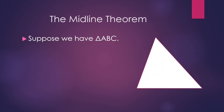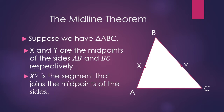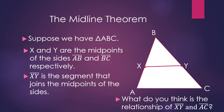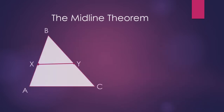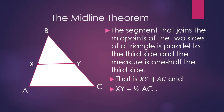Suppose that we have triangle ABC and XY are the midpoints of sides AB and BC respectively. XY is the segment that joins the midpoints of the sides. The midline theorem states that the segment joining the midpoints of two sides of a triangle is parallel to the third side, and its measure is one half the third side. So in triangle ABC, XY is parallel to AC and XY equals one half the measure of AC.